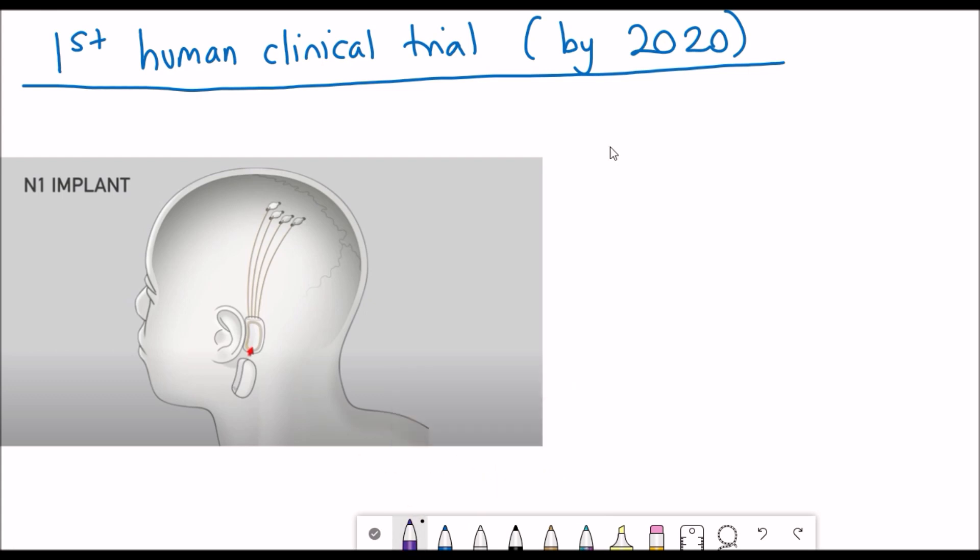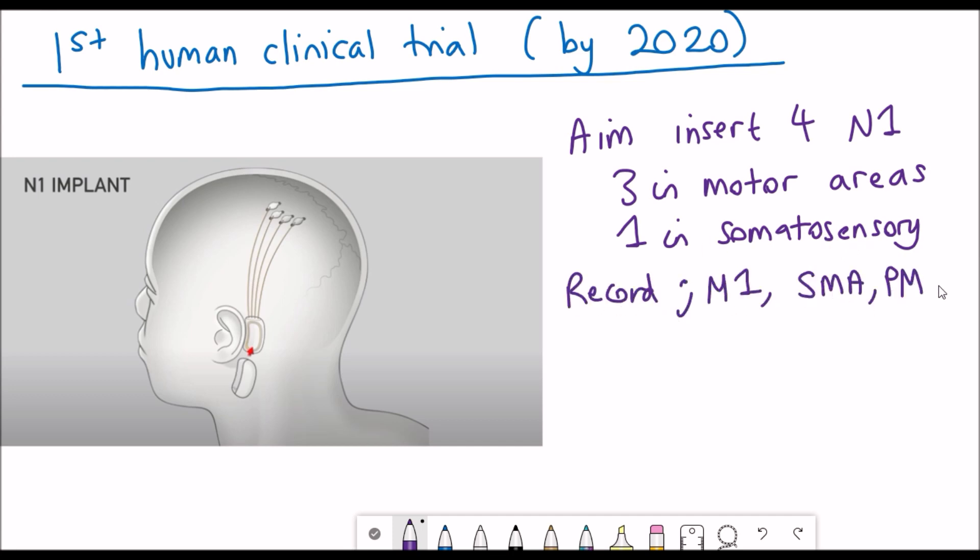The aim for this trial would be to implant four of these N1 sensors and to have three of them in motor areas and one of them in somatosensory area and they are planning to do this in patients with quadriplegia which is those patients who have damage in their spinal cord.